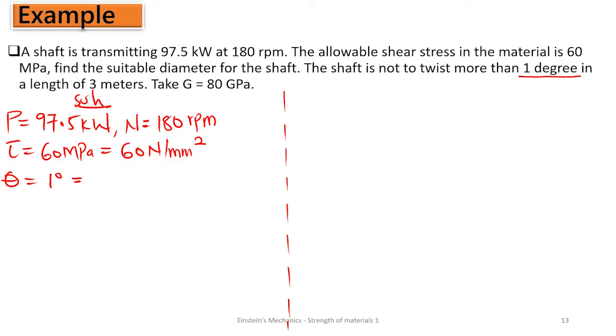Our theta is one degree. Converting this to radians, that is pi over 180 multiplying one, which equals 0.0175 radians. We have a length of 3 meters, so L is 3000 mm.